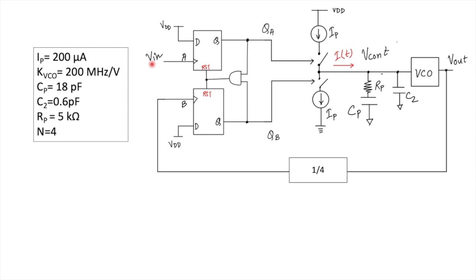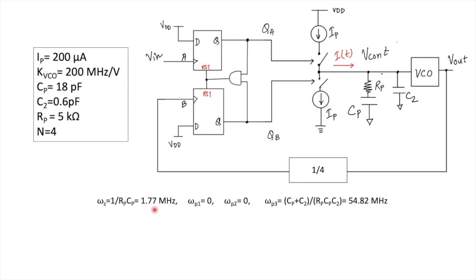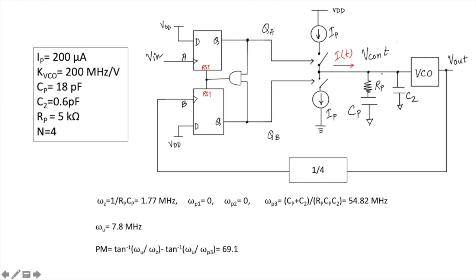Calculating the poles and zeros: there is one zero at 1/(RP × CP), which evaluates to 1.77 MHz. Ω_P1 and Ω_P2 are at zero (origin poles). The third pole, as discussed in the theory, is at 54.82 MHz. The unity gain frequency evaluated from MATLAB is 7.8 MHz, and the estimated phase margin comes out to be 69.1°.